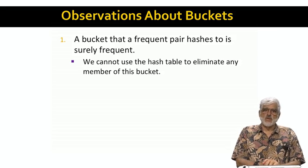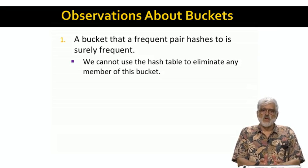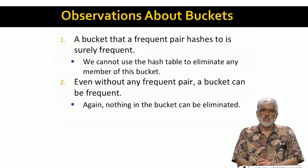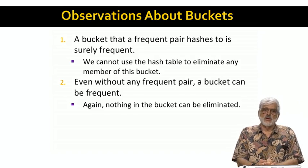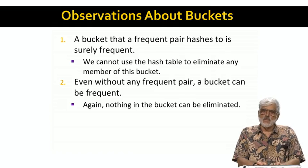Unfortunately, there may be many infrequent pairs that hash to the same bucket, and these might be counted on the second pass as well. We can hope that at least one member of the pair is not a frequent item, which will inhibit us from counting the pair. But sometimes you will have a pair that is not frequent, but both its items are frequent and it hashes to a frequent bucket — that pair will be counted on the second pass even though it is not frequent. It is also possible that a bucket will be frequent but there is no frequent pair hashing to that bucket, since each bucket's count is the sum of the counts of all the pairs that hash to it.